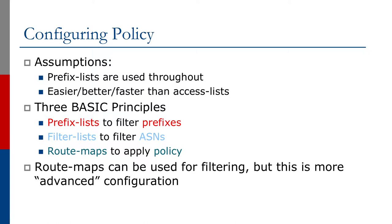We can use route maps for filtering prefixes and for filtering based on AS numbers as well, but I consider this a little bit more advanced configuration and we'll only really touch on those features much later in this series. For now we're going to keep things as simple as possible to make the multi-homing examples as understandable for all viewers.